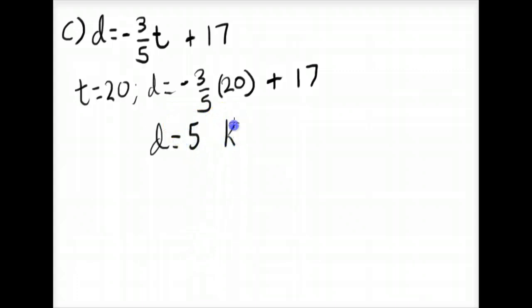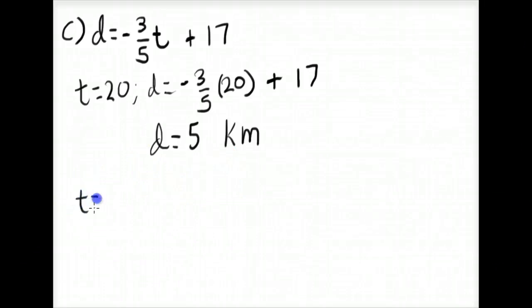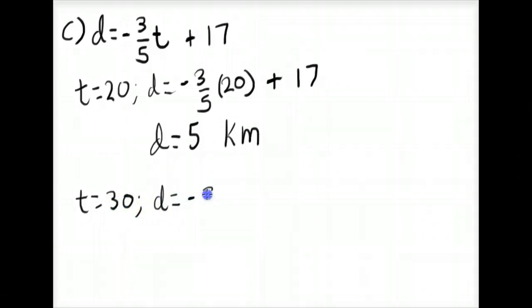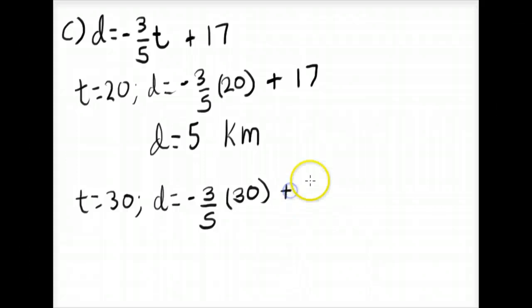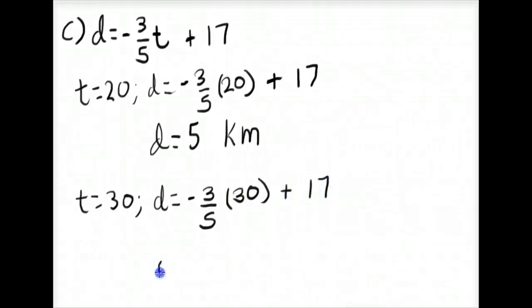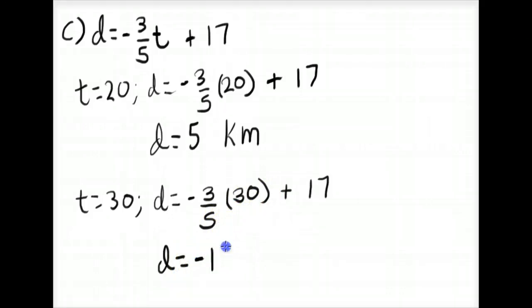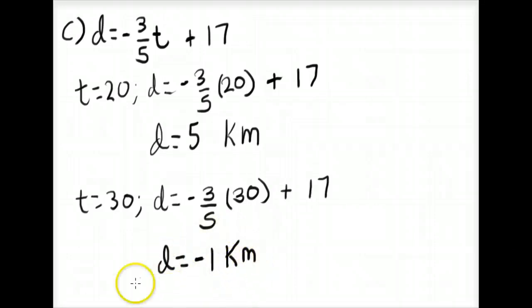For T equals 30, we plug 30 into the equation: D equals negative 3 fifths times 30 plus 17, which gives negative 18 plus 17, equaling negative 1 kilometer. At the rate they're traveling, at 30 minutes they'll actually pass their house and be 1 kilometer past it.